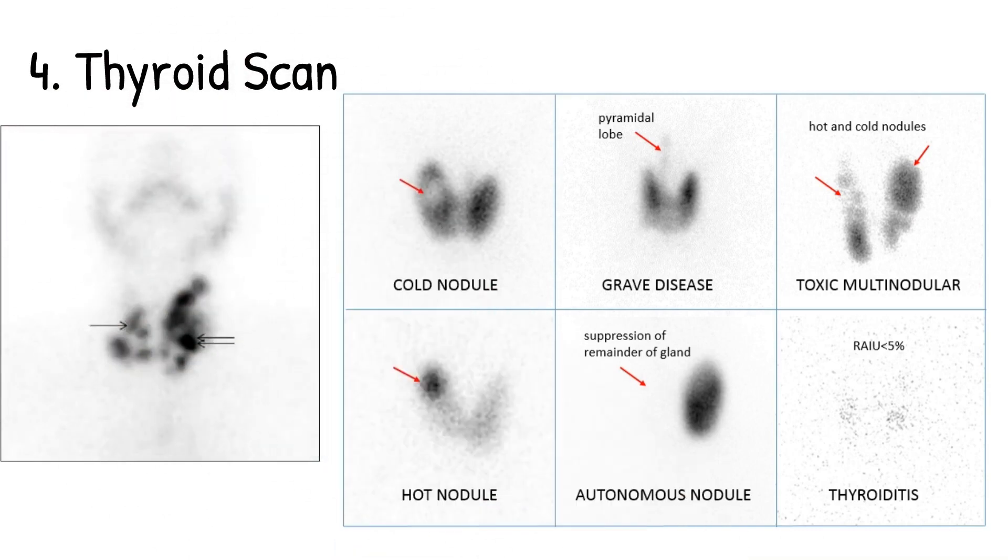Autonomous functioning nodule, which is also overactive thyroid. And of course, the goiter, which you can actually see there on the far left.